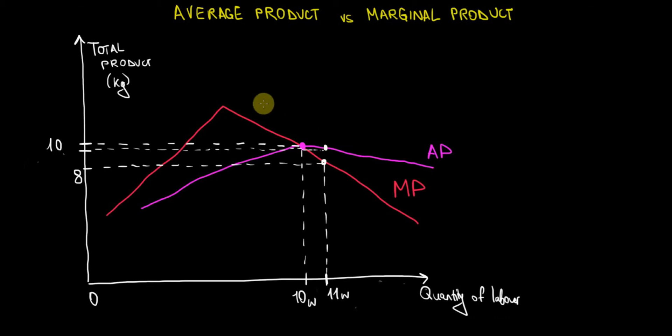In this video I want to explain better the average product, the marginal product, and the connection between them on a graph and using some algebra. This is going to be a fairly difficult concept to explain, but I hope that with this example it will be fairly understandable.